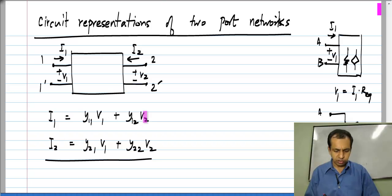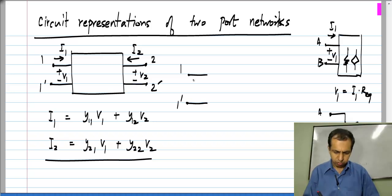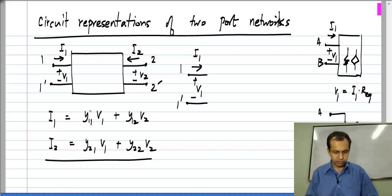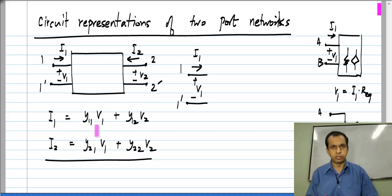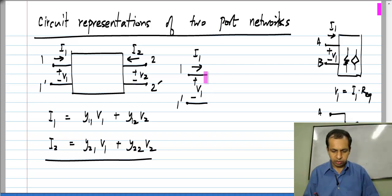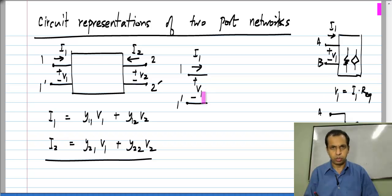For each of these terms there will be a corresponding element. This is port 1 and we have V1 across it. The current flowing into port 1 is a sum of two parts: Y11·V1 plus Y12·V2. Let us look at the Y11·V1 term — it is flowing into port 1 and it is related to the voltage between the same two terminals 1 and 1-prime.